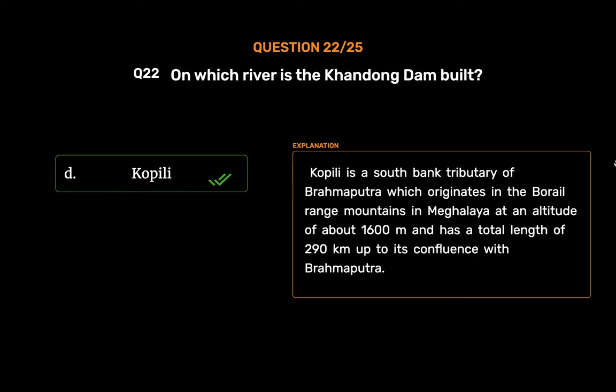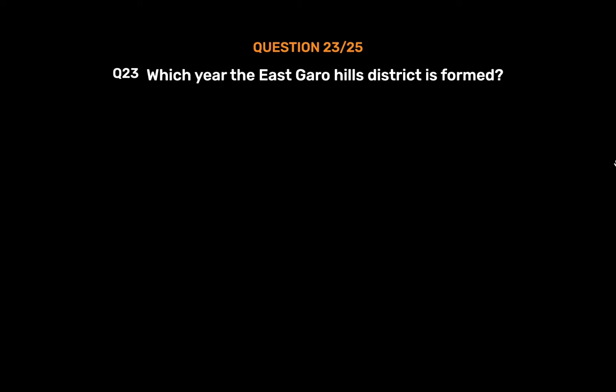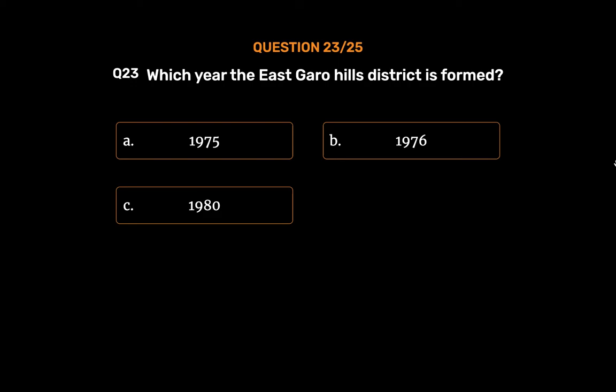Question number 23. Which year was the East Garo Hills District formed? Option A: 1975. Option B: 1976. Option C: 1980. Option D: (not provided).